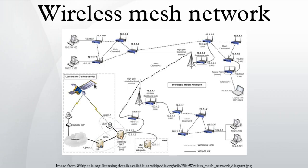A wireless mesh network is a communications network made up of radio nodes organized in a mesh topology. It is also a form of wireless ad hoc network. Wireless mesh networks often consist of mesh clients, mesh routers and gateways.